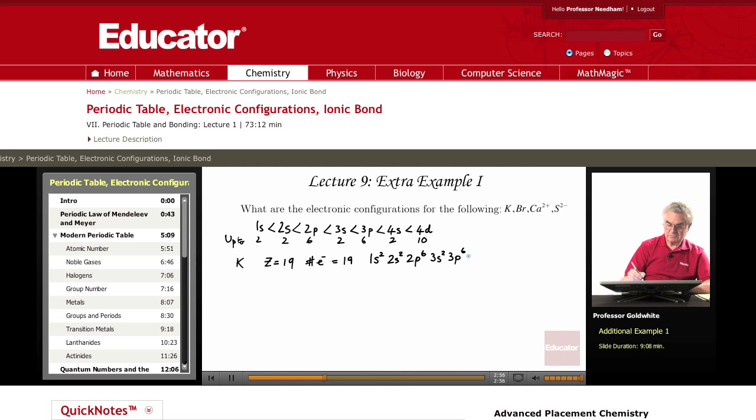And then 4s1. Note, we are not starting to fill the 3d orbital as yet. The 4s fills before the 3d. Notice something else: this atom, potassium, has an electronic configuration that represents a set of completely filled subshells and one electron in an s orbital beyond those subshells.